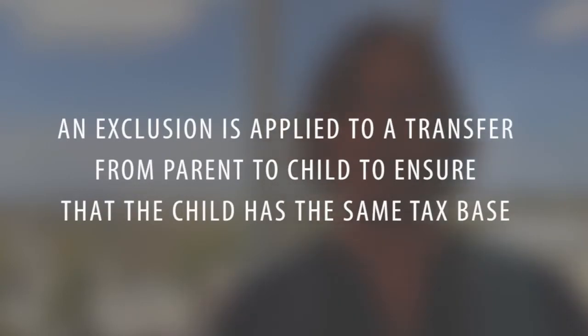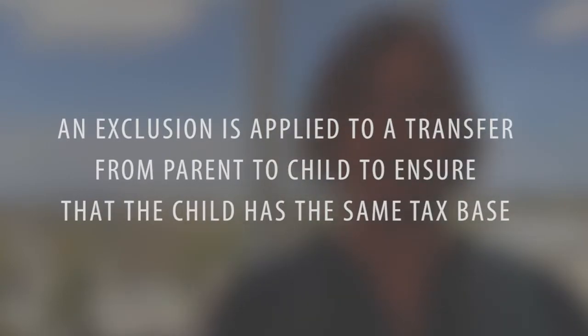Now if this same scenario were to happen and I was a parent transferring to my child and I wanted to transfer this property to them, there is an exclusion that you can get — or if a grandparent transferred to that same child. The exclusion can be passed along to them and they can have the same tax base as you had back in 1990. So it's very important that if you do this kind of transfer, you get the proper paperwork filled out with the county assessor's office. This allows you to move that tax base over and really help keep those taxes lower and keep the property in the family.